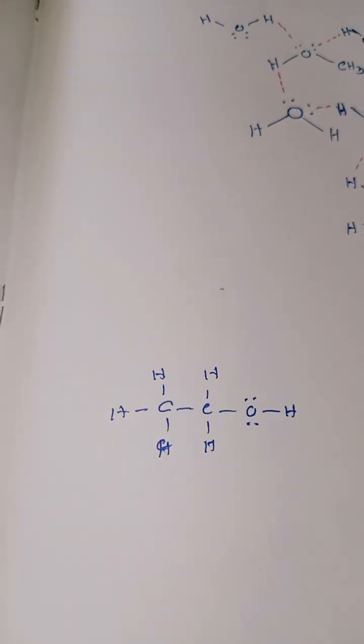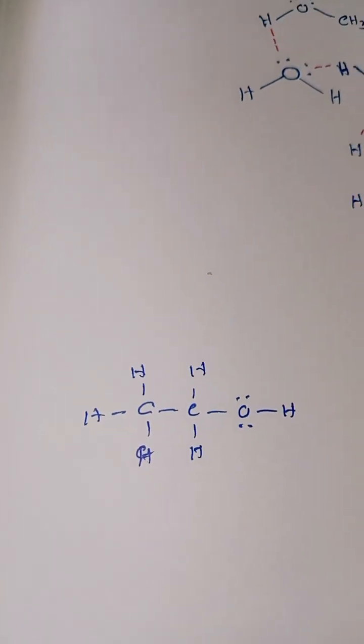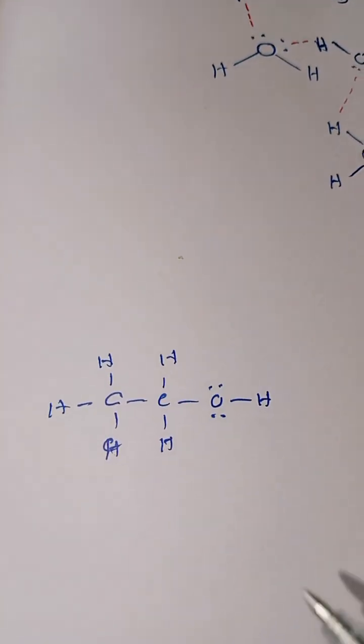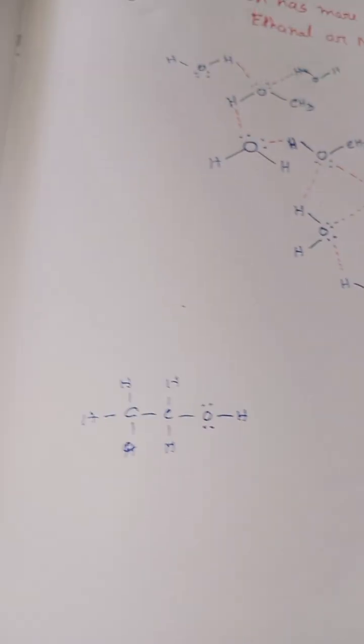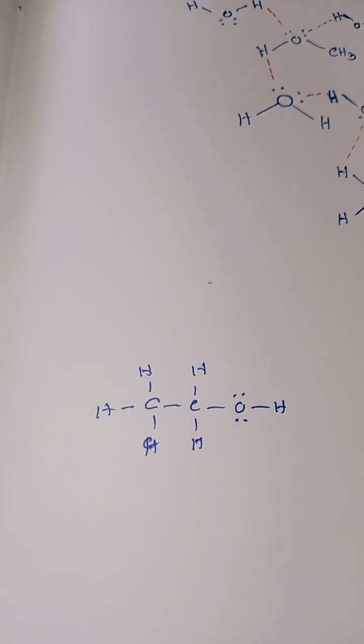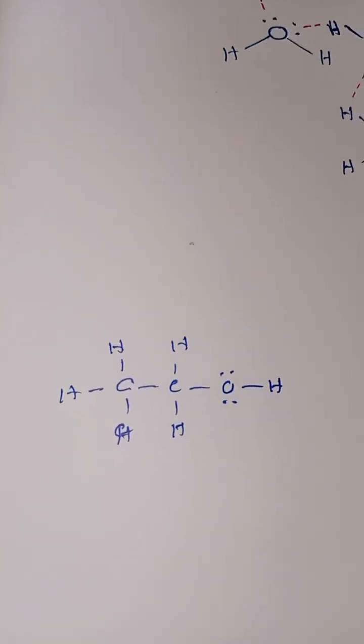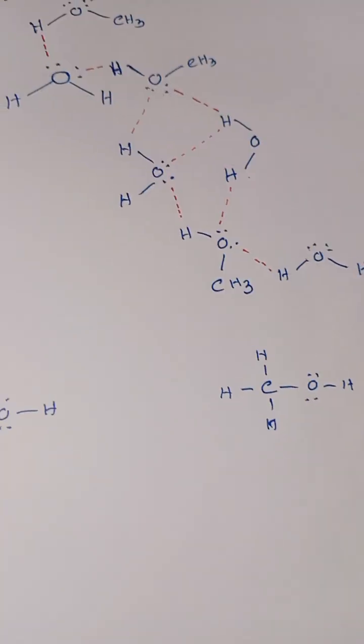More carbon-carbon bonds and carbon-hydrogen bonds means more London dispersion force. London dispersion force is stronger in ethanol than methanol. Here London dispersion force is playing an important role for boiling point. Since the London dispersion force is more in ethanol, ethanol has a higher boiling point than methanol.